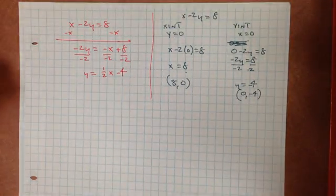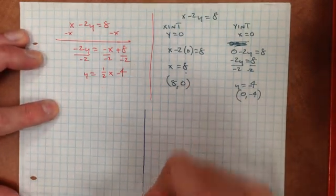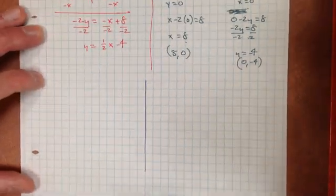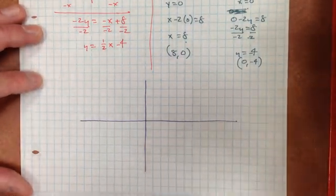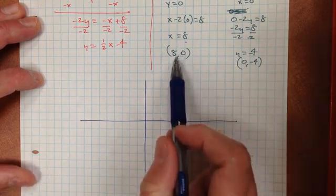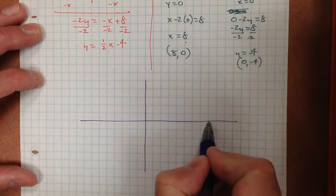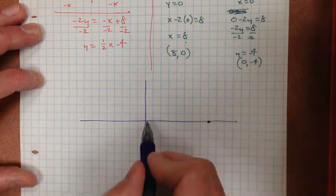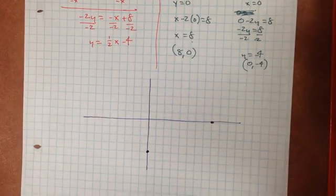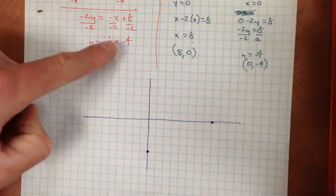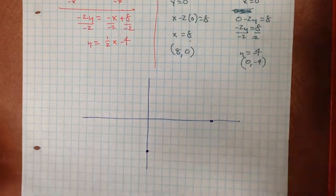When I graph this, they should both match up. First, I'll plot the intercepts: (8, 0) and (0, negative 4). That should be my line. Now let me check using slope-intercept form — start at (0, negative 4), slope of 1 half, positive slope, up 1 over 2. As you can see, I've ended up getting the same points. That is my line — the equation of my line — and here is its graphical representation.